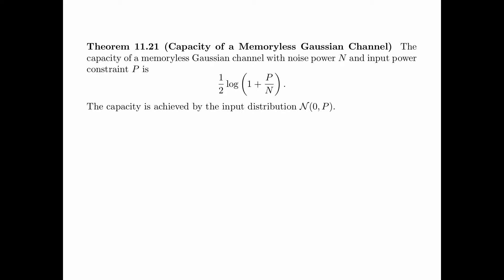Theorem 11.21 states the capacity of a memoryless Gaussian channel. The capacity of a memoryless Gaussian channel with noise power n and input power p is equal to (1/2) log(1 + p/n). The capacity is achieved by the Gaussian input distribution with mean 0 and variance p. This is the main theorem in this section.